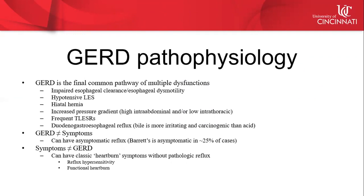GERD pathophysiology is complex because GERD is not one problem — it is the final common pathway of multiple dysfunctions. Sometimes these are isolated, sometimes multiple, and sometimes they overlap and cause each other. Contributing factors include impaired esophageal clearance and dysmotility, hypotensive LES, hiatal hernia, increased pressure gradient from high intra-abdominal or low intrathoracic pressure, frequent TLESRs, or duodenogastroesophageal reflux, which can cause even more problems than acid. Bile is more irritating and carcinogenic than acid, leading to Barrett's esophagus and esophageal cancer.